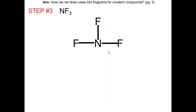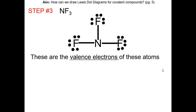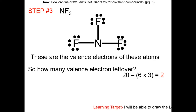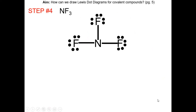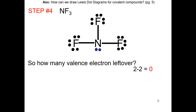In step three, put six electrons on each non-central atom. We do not do this for hydrogen, because hydrogen just needs two electrons to fulfill the octet rule. We placed six electrons for each fluorine — three times six is 18. We had 20 left over from the previous step, so 20 minus 18 is 2. In step four, place the remaining two electrons onto the central atom, which is nitrogen. Two minus two is zero. Once you reach zero, you are done drawing the Lewis dot diagram.